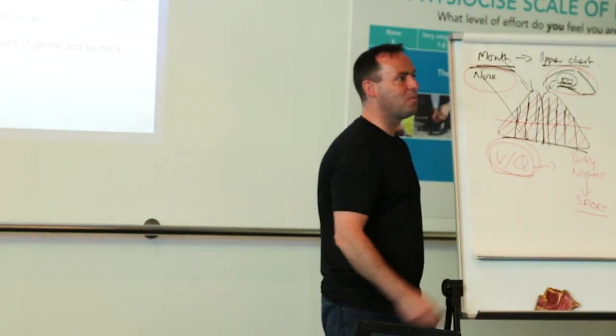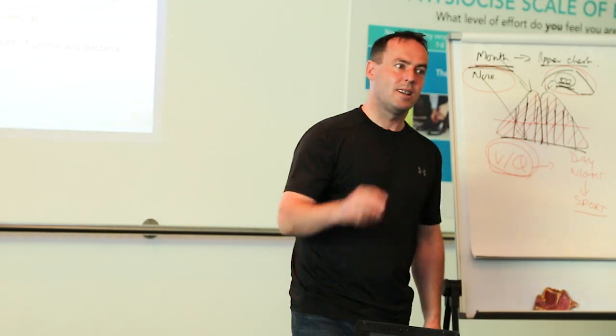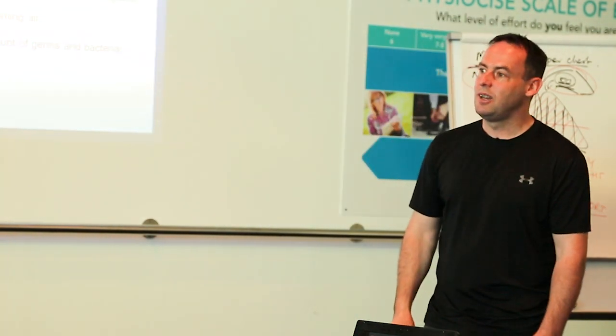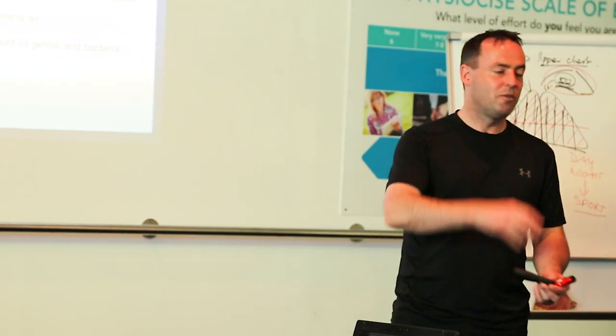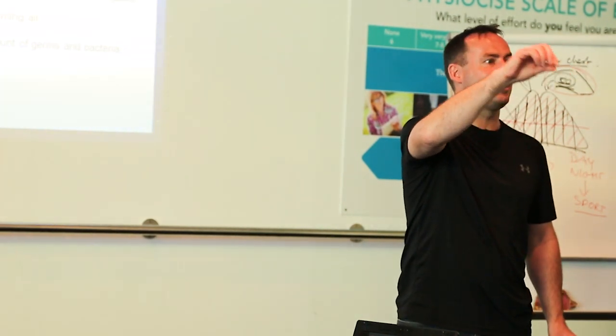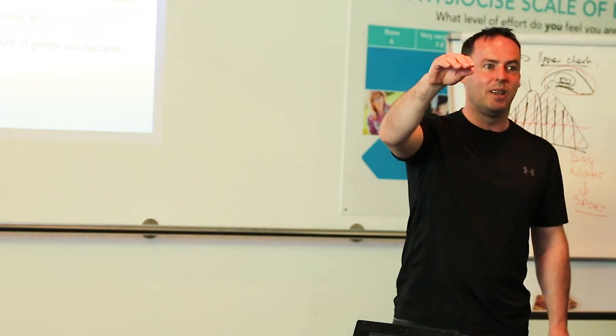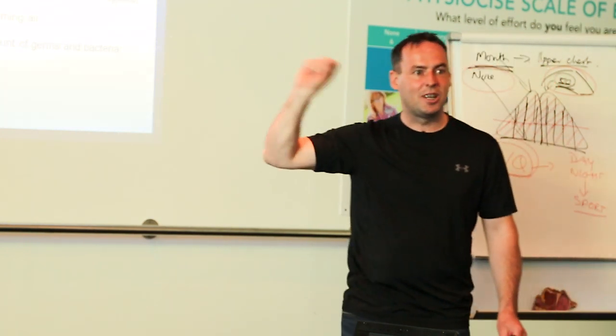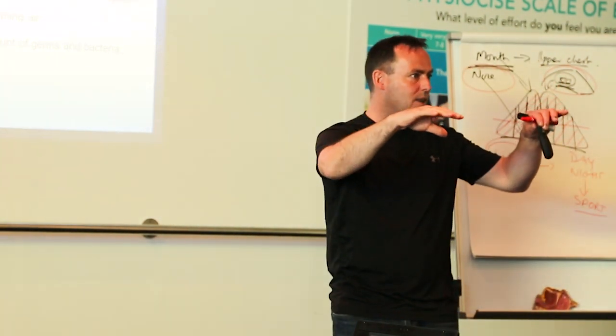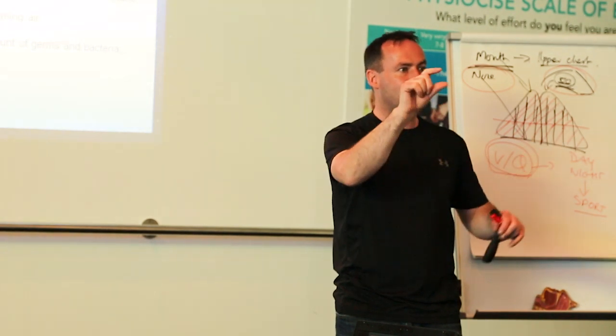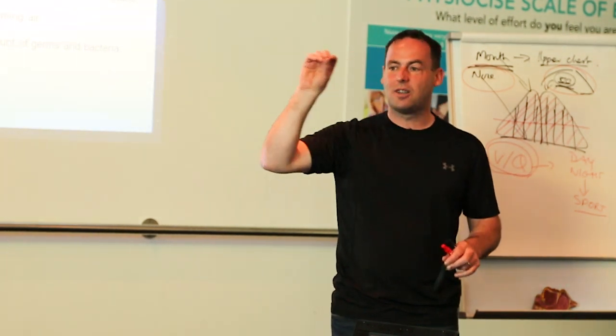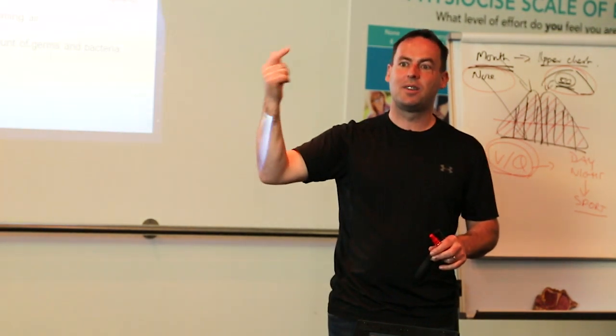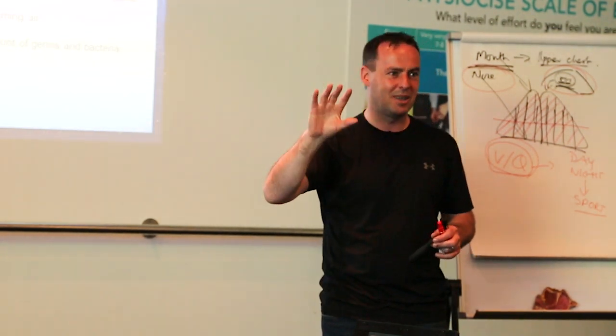Nose breathing slows down the breaths. There's a pacemaker in the brain that is monitoring your breathing. Stanford Medical School discovered it in March of this year. So you've got a pacemaker in your brain which is monitoring your breathing. If you breathe fast, that pacemaker sends signals of agitation to the brain. If you breathe really slowly, the pacemaker is going to send signals of calming. Fast breathing causes stress. Mouth breathing is fast breathing.